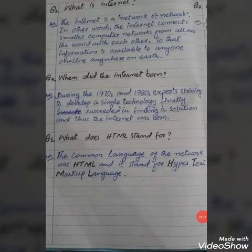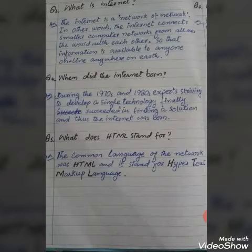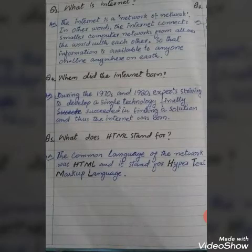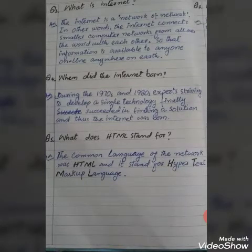Question number 3: what is the internet? The answer is: the internet is a network of networks. In other words, the internet connects small computer networks from all over the world with each other, so that information is available to anyone online, anywhere on earth.